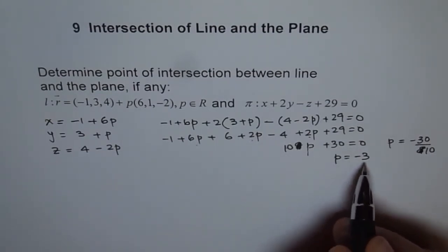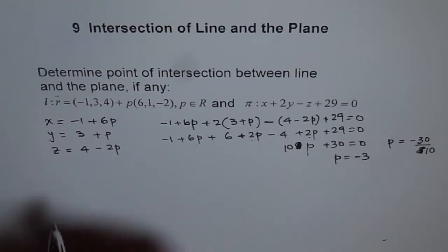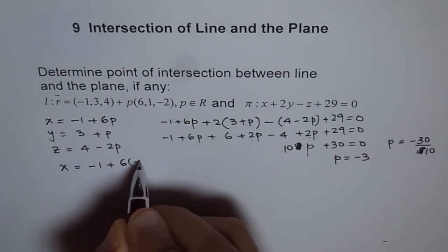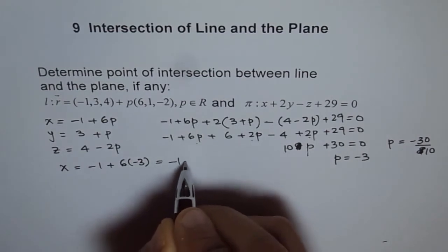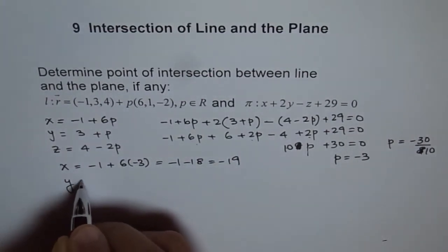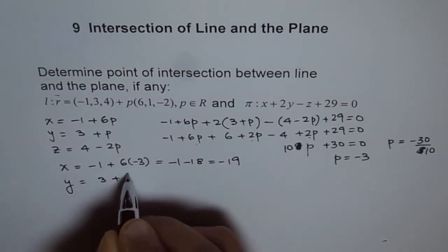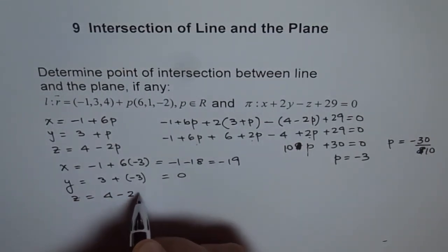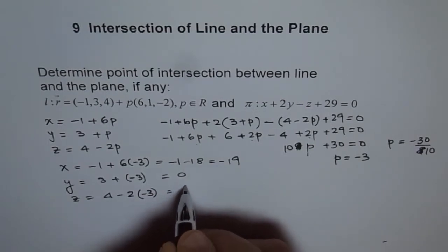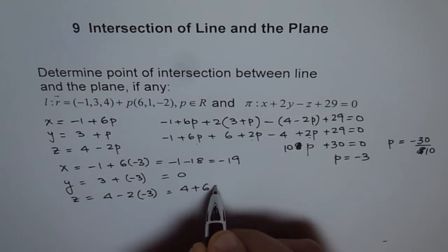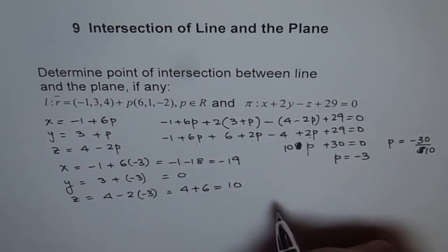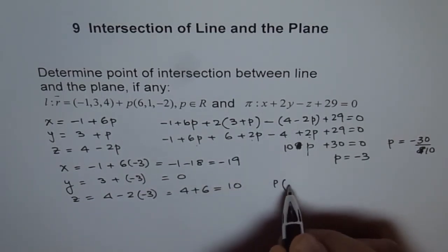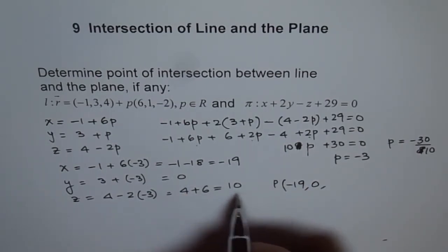Since we know p is minus 3, we can plug in this value here and get our x, y and z. So we get x equals minus 1 plus 6 times minus 3, which is minus 1 minus 18, which is minus 19. And y is 3 plus minus 3, which is 0, and z is equal to 4 minus 2 times minus 3, which is 4 plus 6, which gives us 10. So the point of intersection for us is x value of minus 19, y value of 0, and z value of 10.